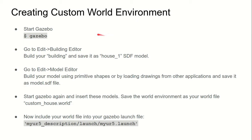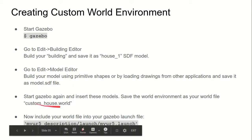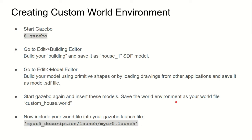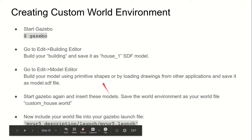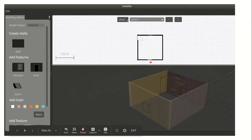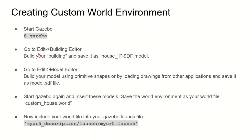Before we launch the launch file, we will discuss how to create a custom world environment. There are various ways to do this. What we do here is use the building editor and create a custom model called house one as an SDF model. You also have the model editor where you can create objects and put them together to create a custom house.world file. Finally, you call this new world file from the launch file. This is a snapshot of the building editor, which you can access by going to Edit and selecting the building editor option.